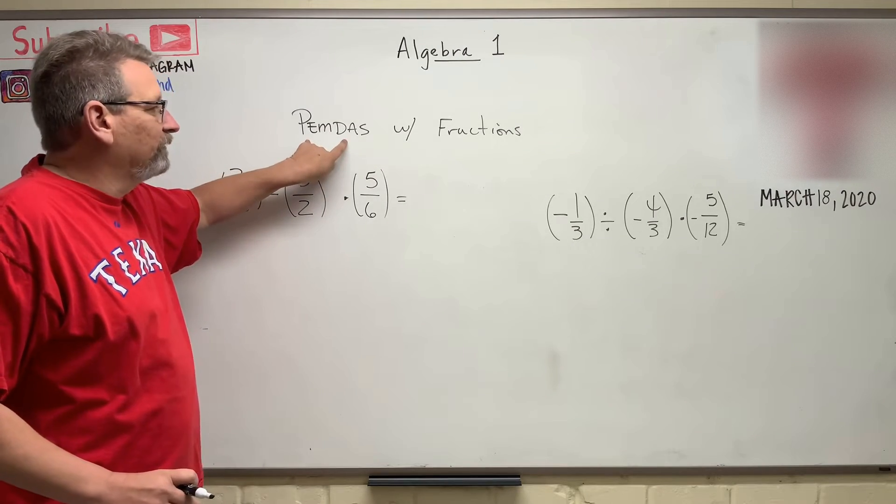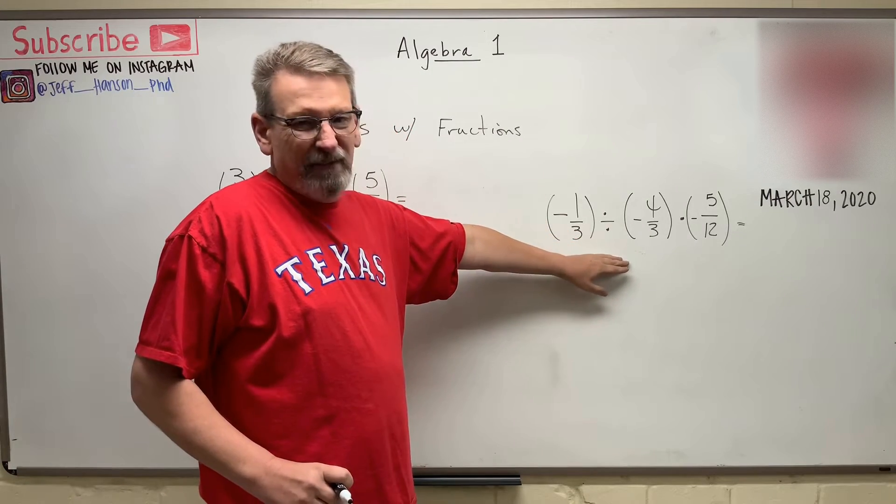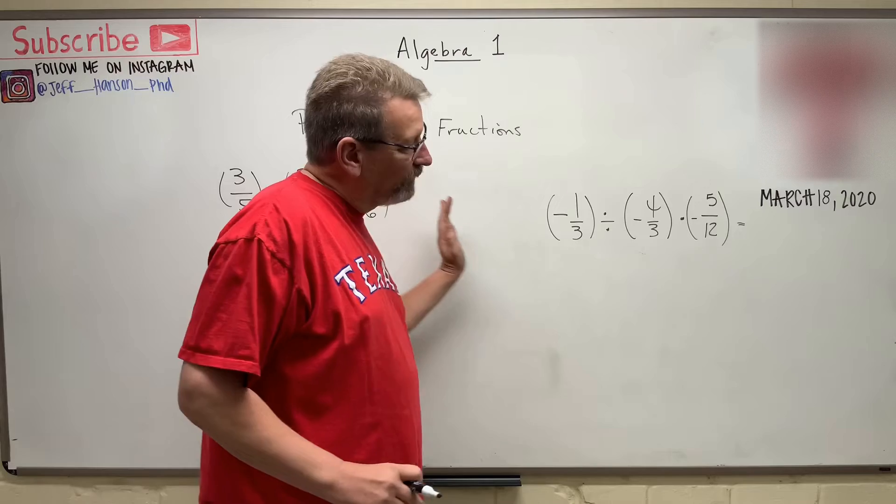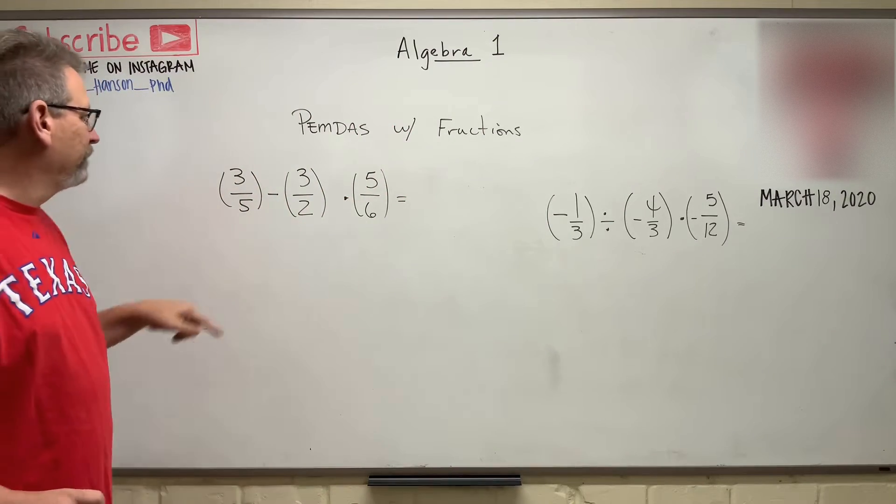If these don't take precedence, like over here where we have a multiply and a divide with the same order of operations, we just work left to right. But over here, we definitely have an order of operations problem.